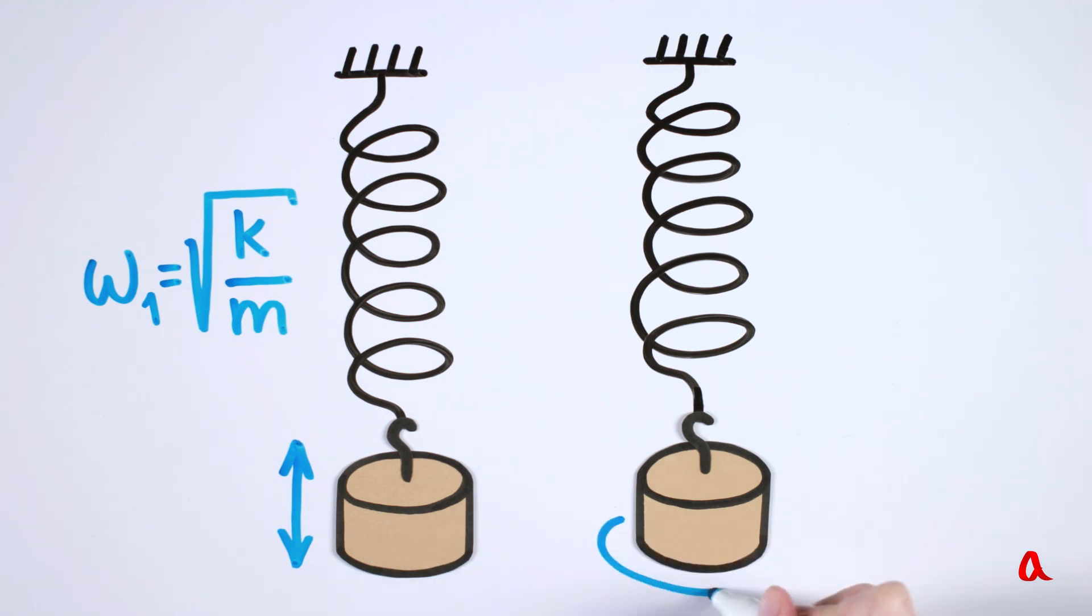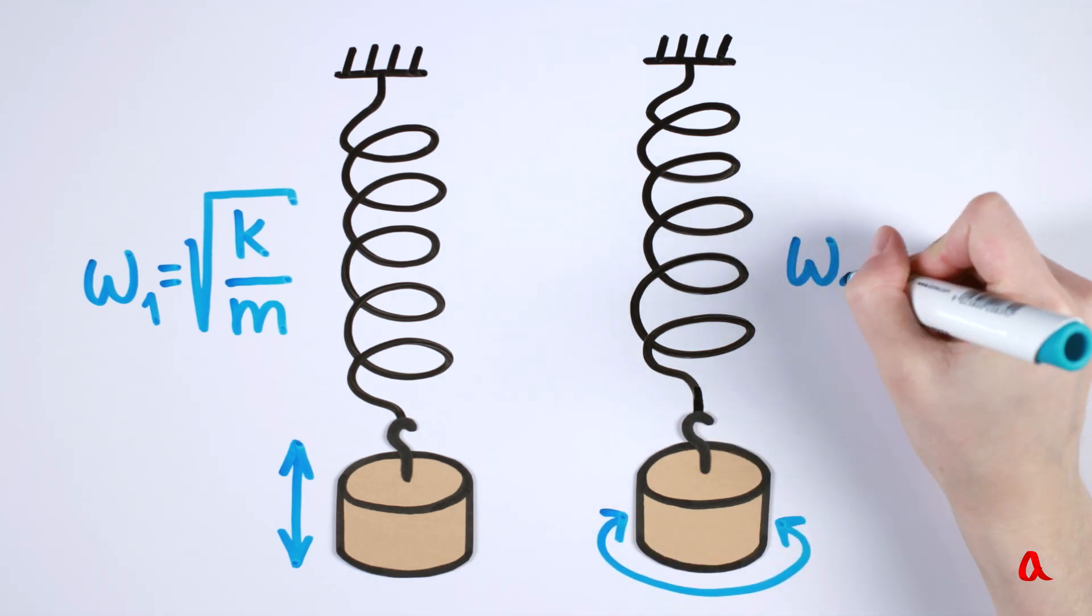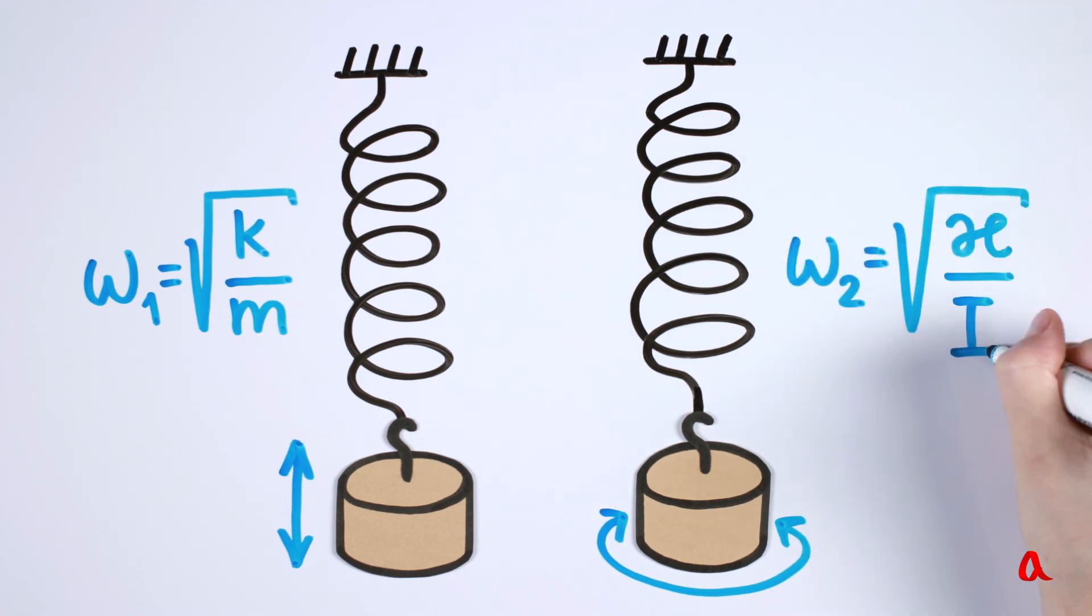And it has a frequency of rotational oscillations, which is determined by the torsional spring stiffness and the moment of inertia of the load relative to the vertical axis. And it seems that if we make the load move vertically, it will oscillate up and down and will not twist. On the contrary, if we spin it, there is no reason for it to start moving vertically.